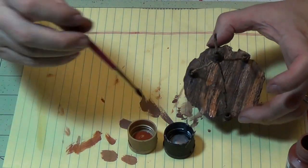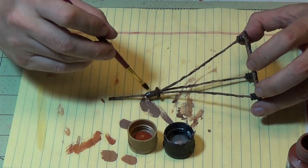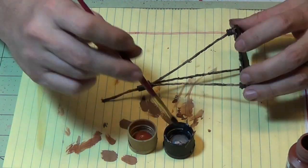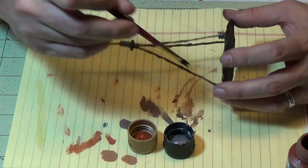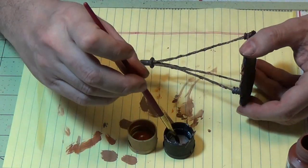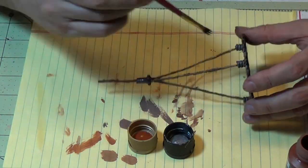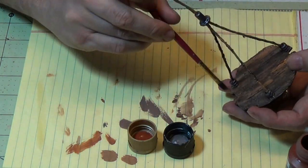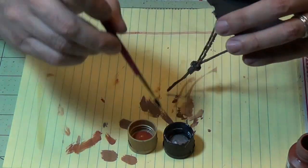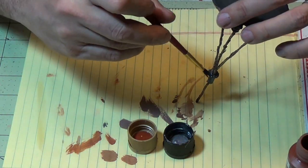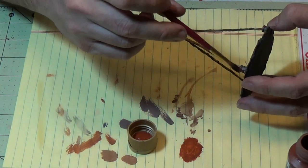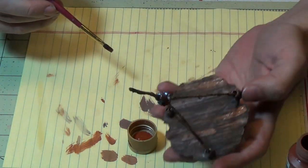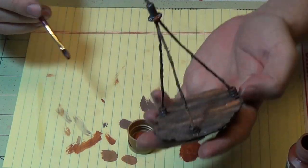So I'm going to use my gun metal to paint the joints where the ropes meet, essentially covering the beads. Just paint those all gun metal. I really like how those look. It just really transforms them from beads to hardware on the lift. Now I'm going to use the burnt sienna. That's a little bit of a rust color. That'll give it a nice age. So there we go.